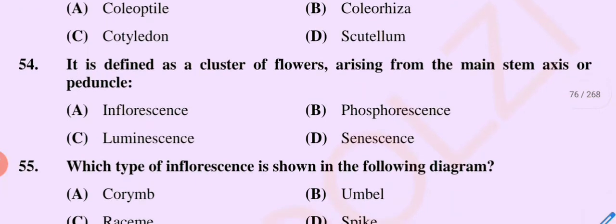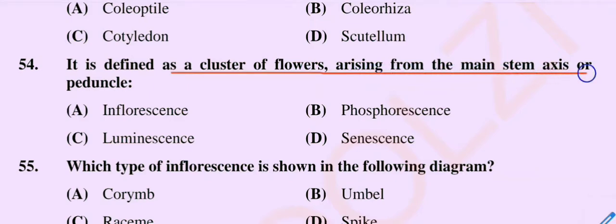Question number 54: It is defined as a cluster of flowers arising from the main stem axis or peduncle — option A inflorescence, option B phosphorescence, option C luminescence, option D senescence. The correct option is option A, inflorescence.